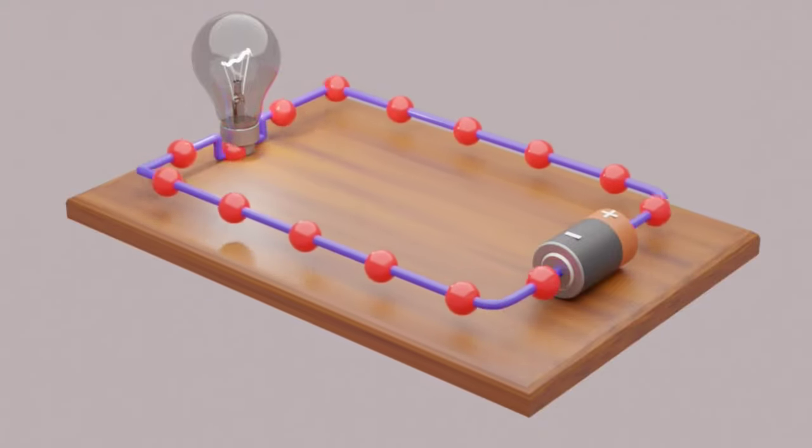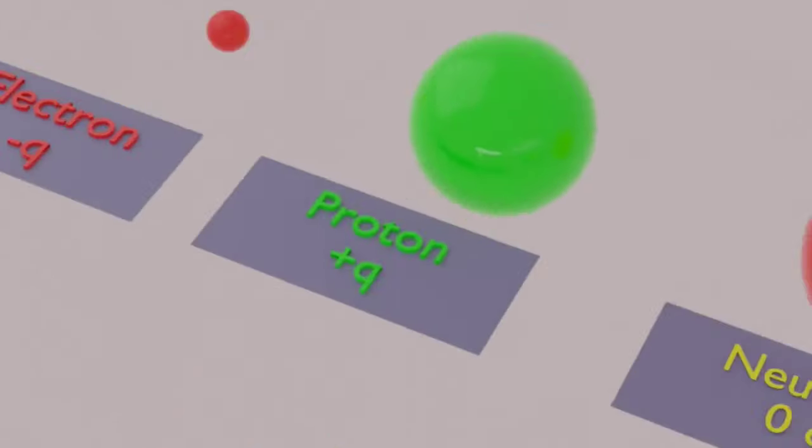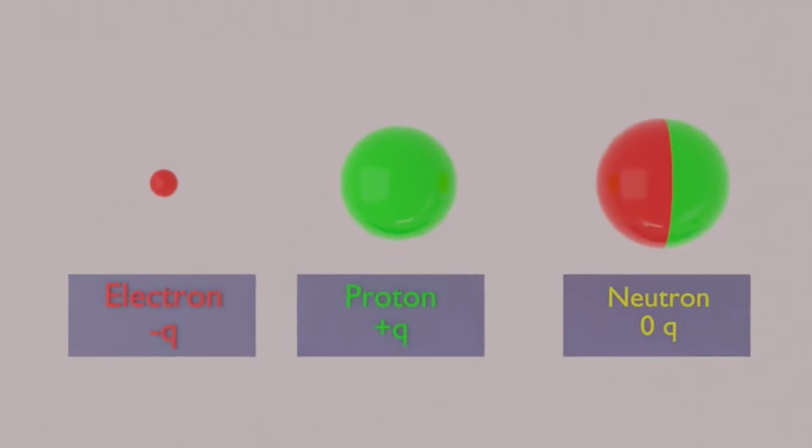What is electric charge? Electric charge is the physical property of the subatomic particles like electron, proton and neutron.